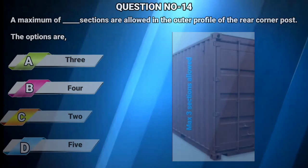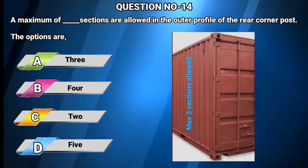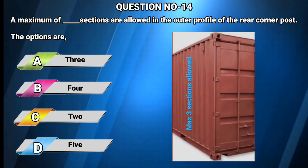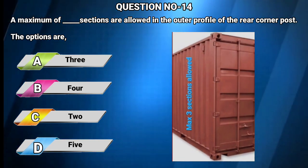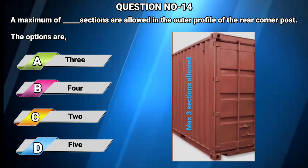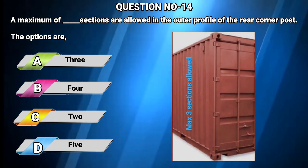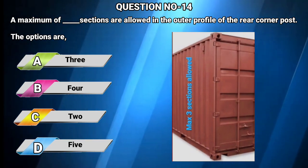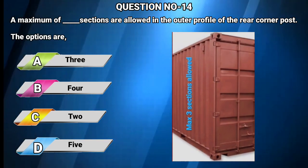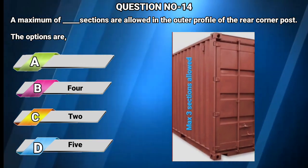Question number 14: A maximum of how many sections are allowed in the outer profile of the rear corner post? Options: A) 3, B) 4, C) 2, D) 5. The answer is A: 3 sections are allowed.